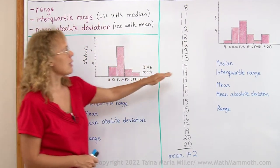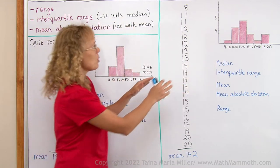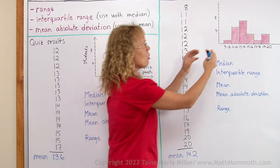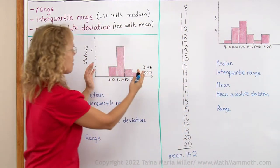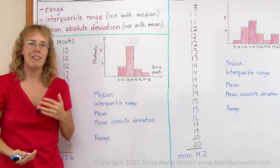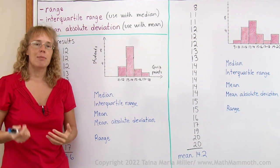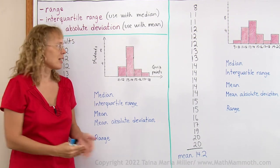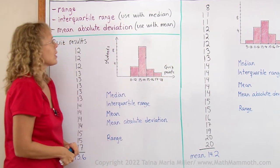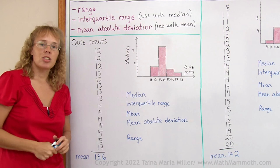You can see just by looking at these that there is more variation in this group. The values are more spread out and here they are more concentrated. But we also want to have something we can calculate, some numbers that will tell us that this over there varies more than this set of data. And we're going to look at three such measures today.